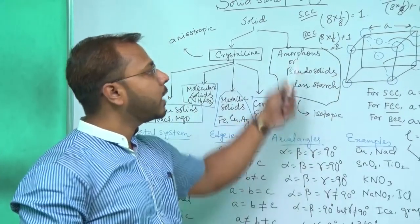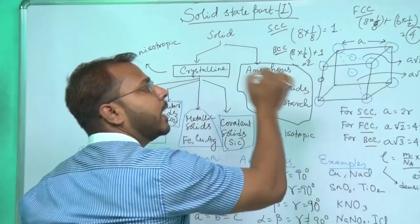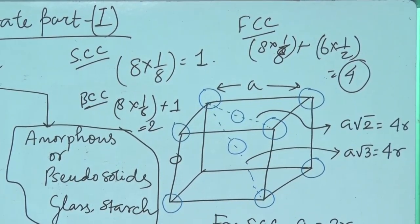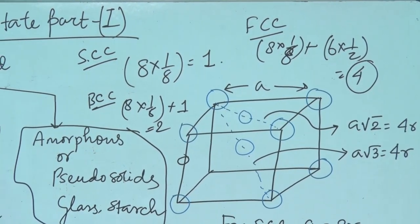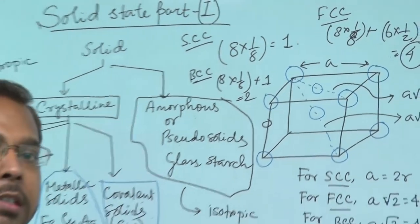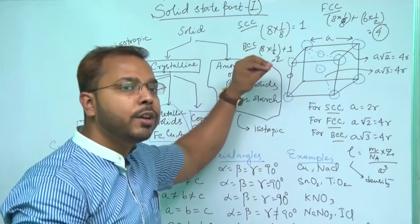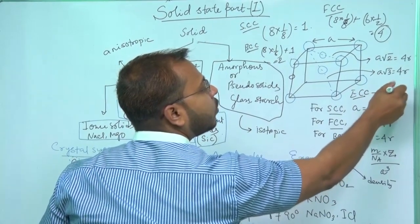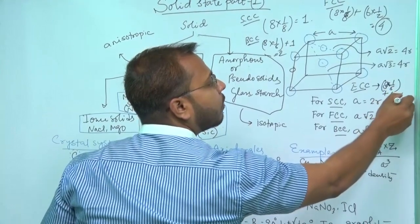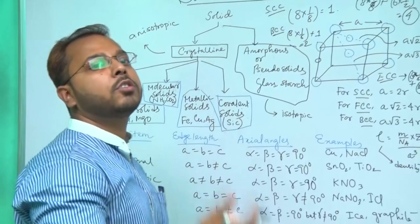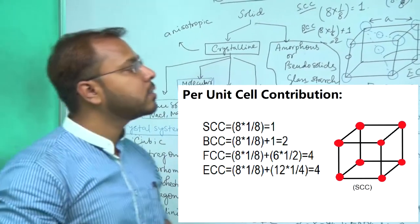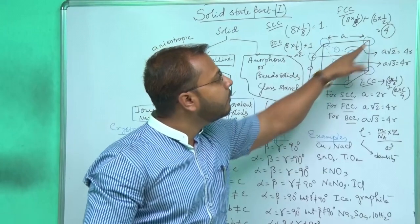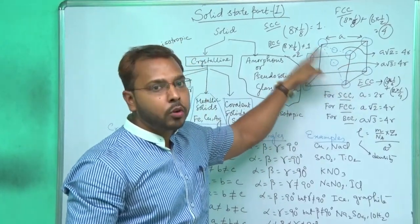For edge-centered cubic (ECC), every edge has an atom. A cube has 12 edges, and each edge atom is shared by four cells — this cell, the one above, the adjacent cell, and the one above the adjacent cell — so the contribution per atom is 1/4. Per unit cell contribution for ECC = 8 × (1/8) + 12 × (1/4) = 1 + 3 = 4.